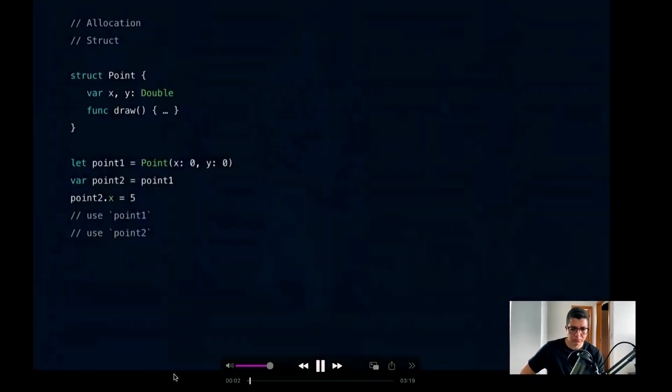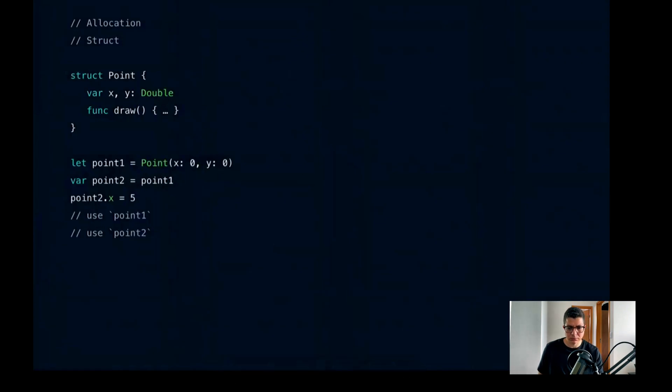Now I'd like to show you a clip from a WWDC talk called 'Understanding Swift Performance' — one of my favorite talks, which summarizes everything we've discussed. It shows a point struct with x and y stored properties and a draw method. We construct the point at (0,0), assign point1 to point2 making a copy, then assign a value of 5 to point2.x. Let's trace through this.